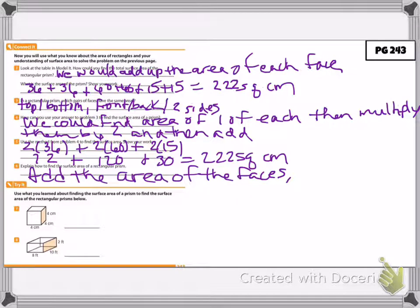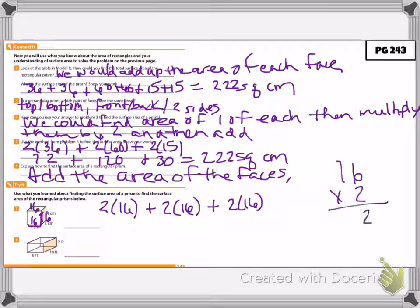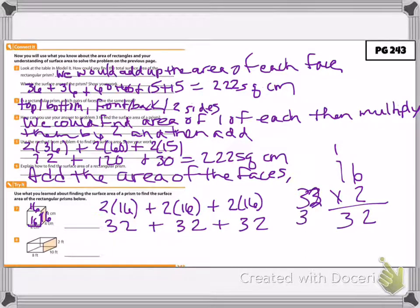On number 7, I'm going to use the method from number 5. This is a cube, so the front is 4 by 4 which is 16, the sides are 4 by 4 which is 16, and the top and bottom are 4 by 4 which is 16. So: 2 times 16 plus 2 times 16 plus 2 times 16 equals 32 plus 32 plus 32 equals 96 square centimeters.